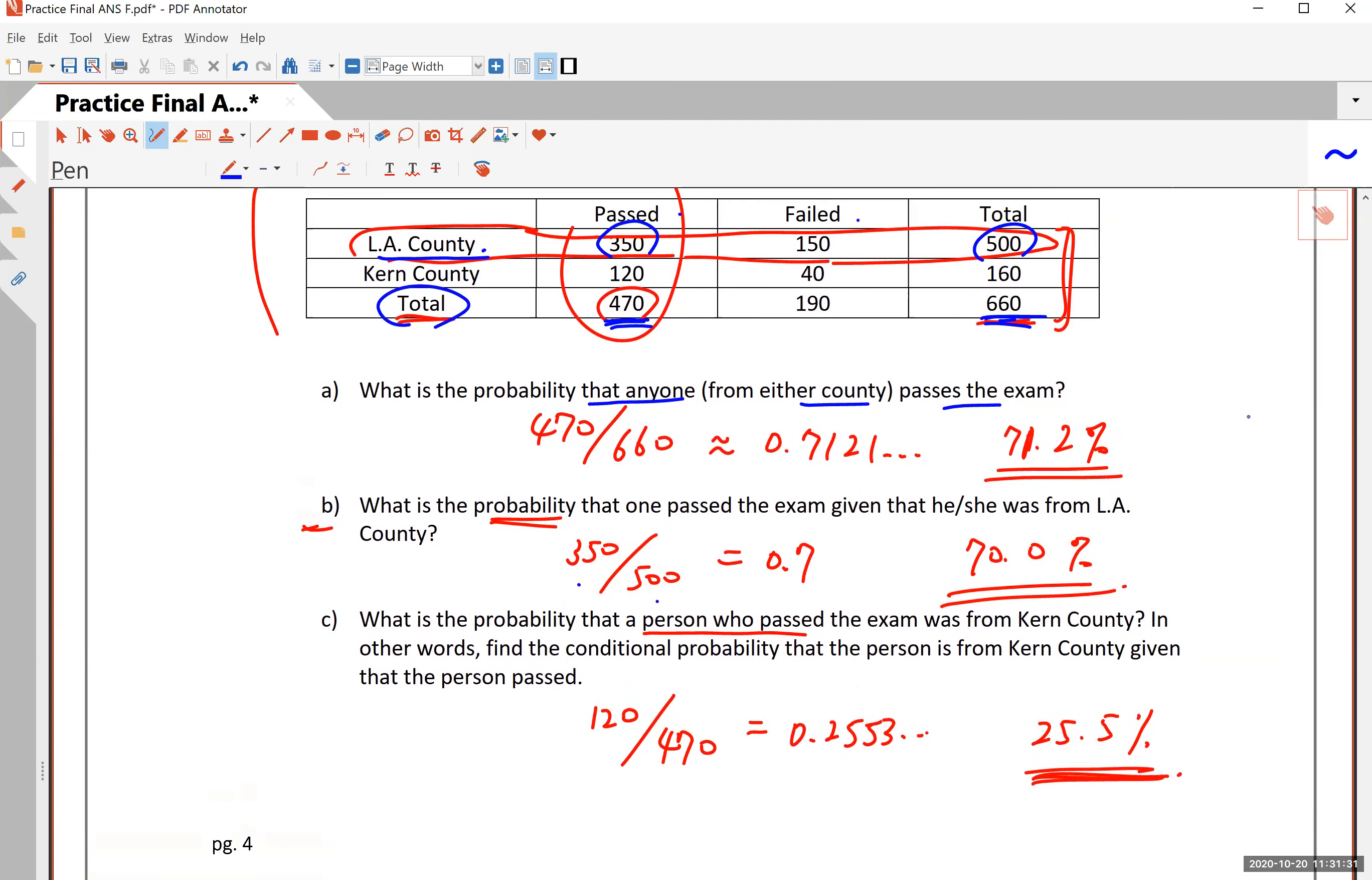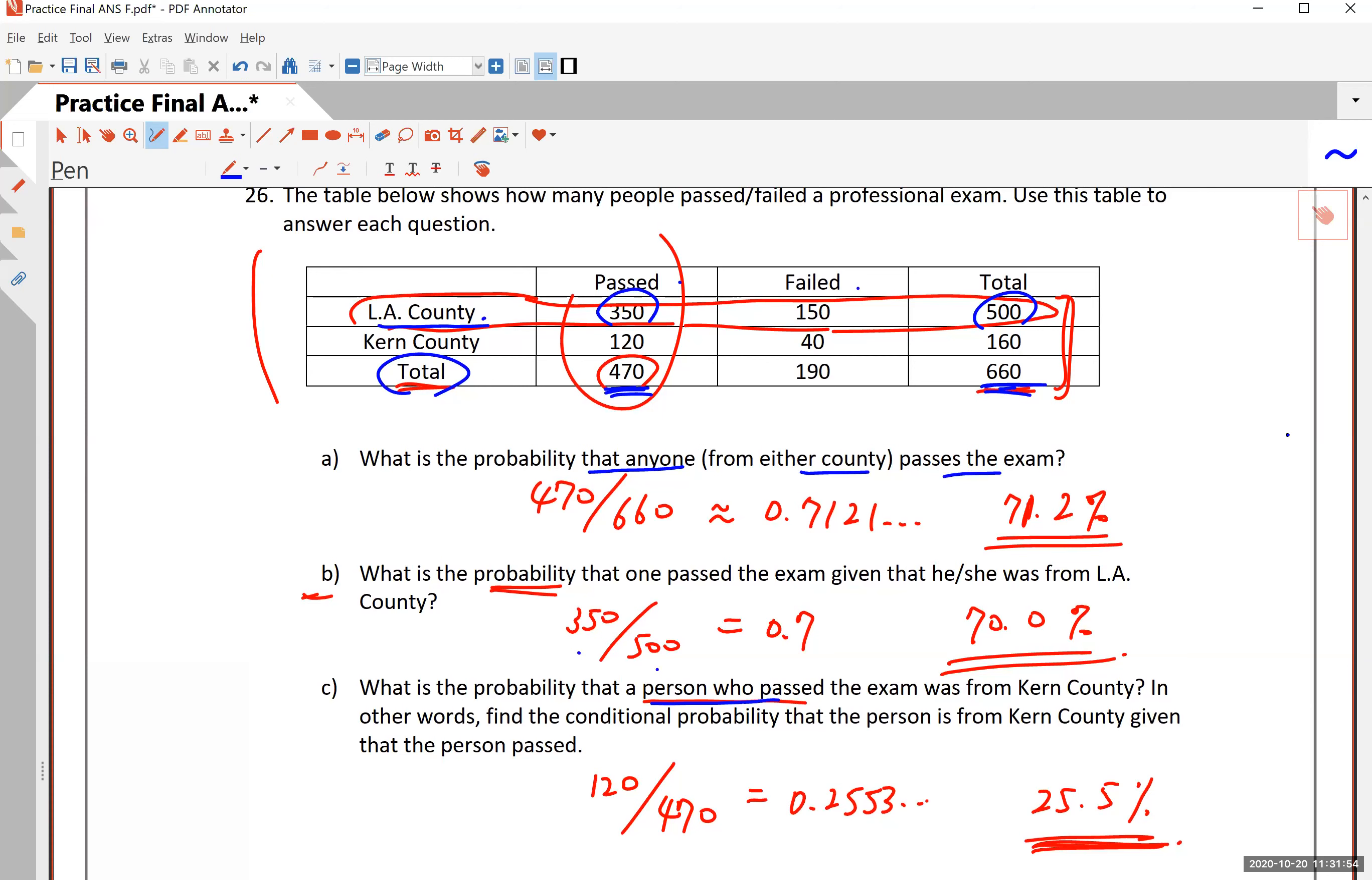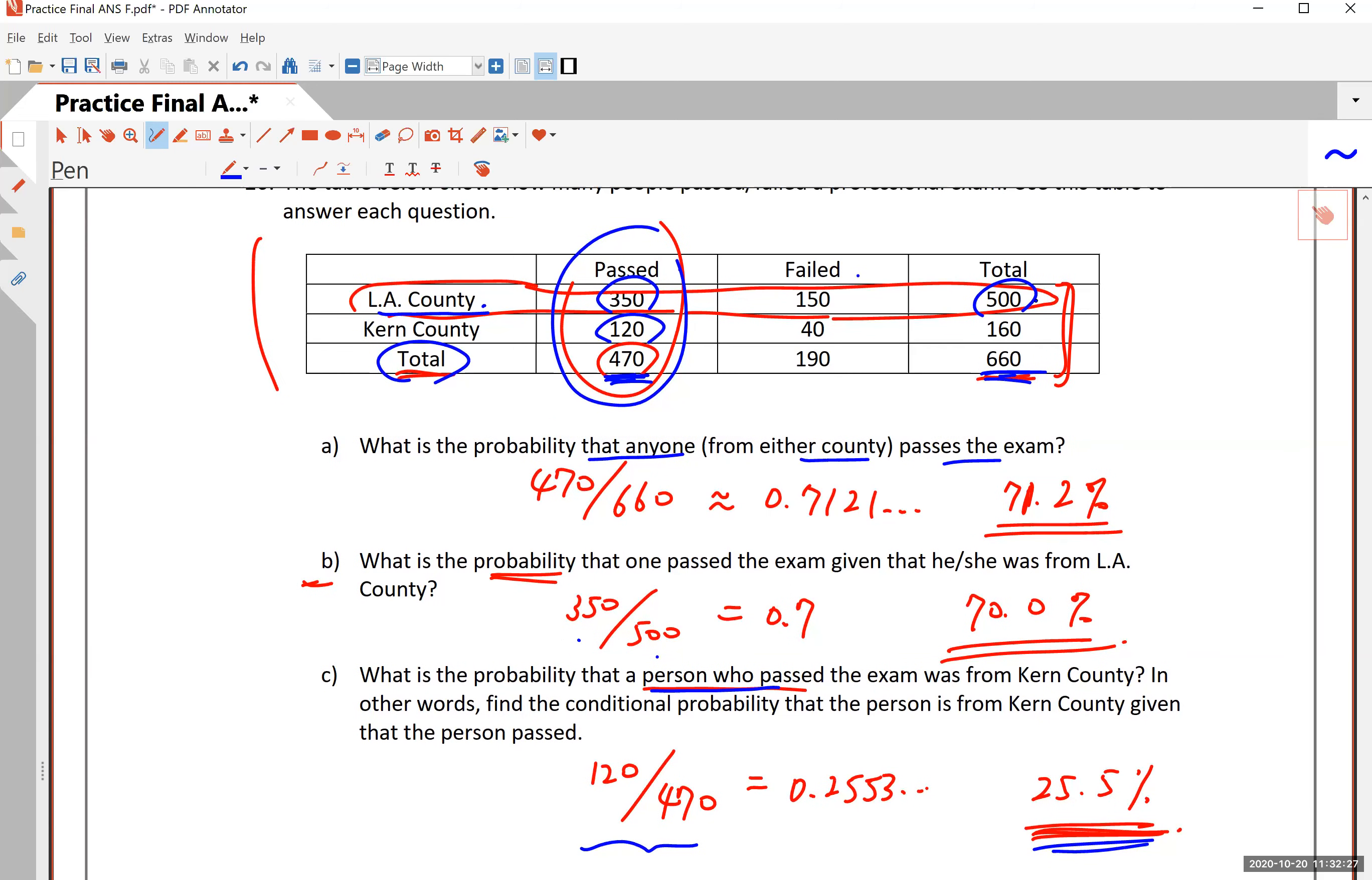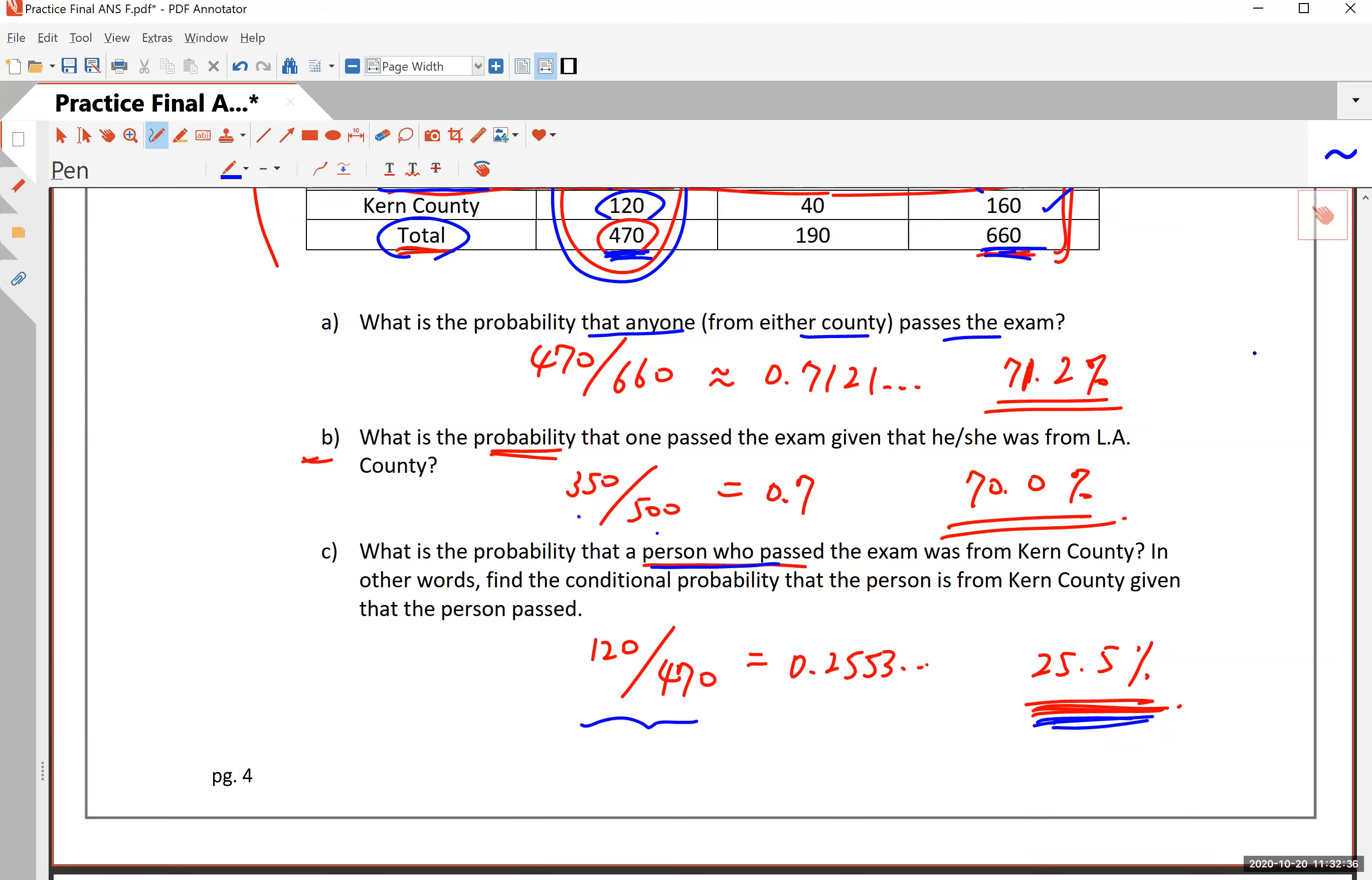Part C, maybe a little more challenging. What is the probability that the person who passed the exam was from Kern County? In other words, find the conditional probability that a person is from Kern County, given that the person passed. This time, we are only thinking of people who passed. And the question is what percent of them are from Kern County. So the universe in this case is the people who passed. That's the first column. So you have 470 of them. Those are the people who passed. And out of the 470, how many are from Kern County? So the answer is 120 divided by 470. This quotient is 25.5% of the people who passed are from Kern County.